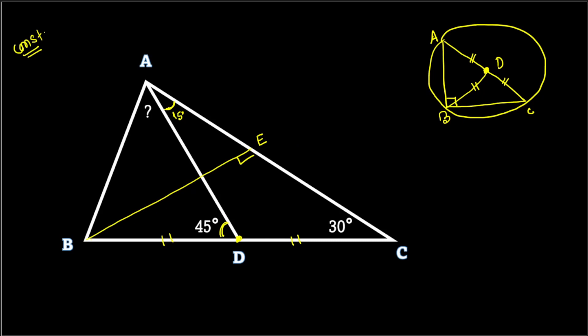I'm going to use the same concept in triangle BEC. Since this angle is 90 degrees, BC is the hypotenuse and D is the midpoint. When we draw the ED line, this is a median. So we can say BD equals DC equals ED.